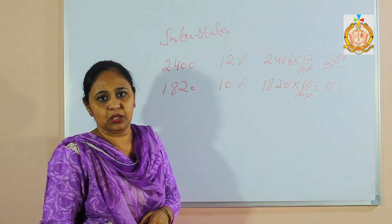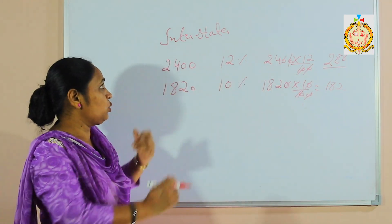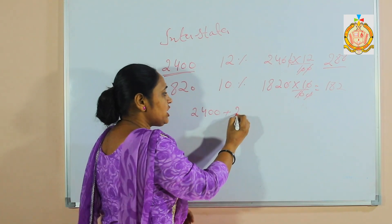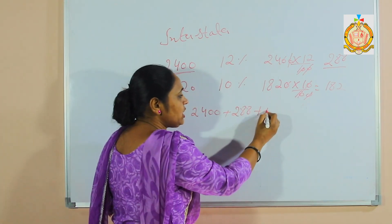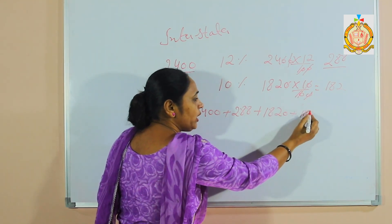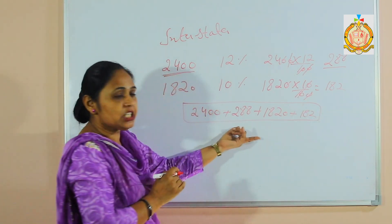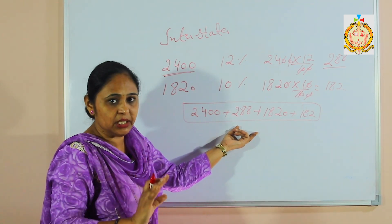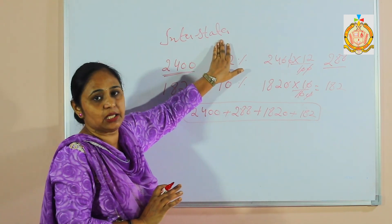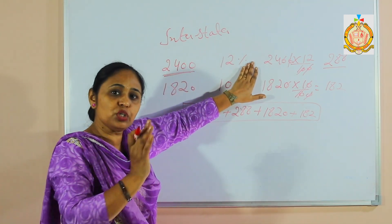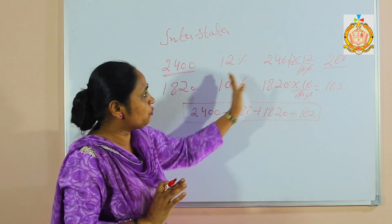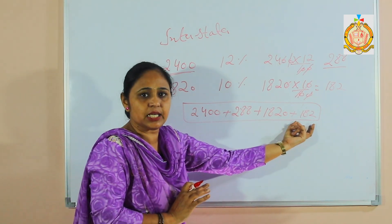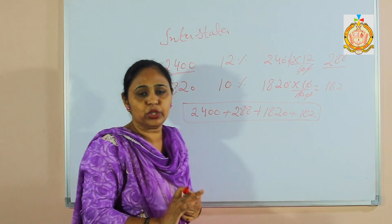To find the total bill, we do not take only the GST — we must add the cost amount as well. So: cost 2,400 + GST 288, and cost 1,820 + GST 182. Adding all these gives the full bill amount. Since it is inter-state, we take the full GST only once — do not split it half-half. Cost plus GST, then again cost plus GST, equals the total bill. Please try to do it. Thank you.